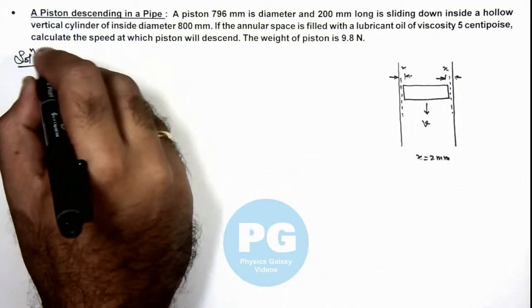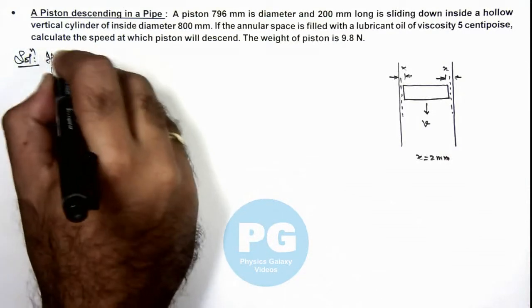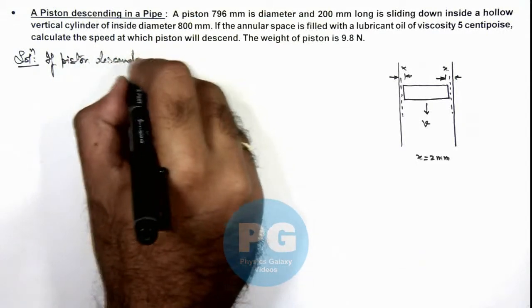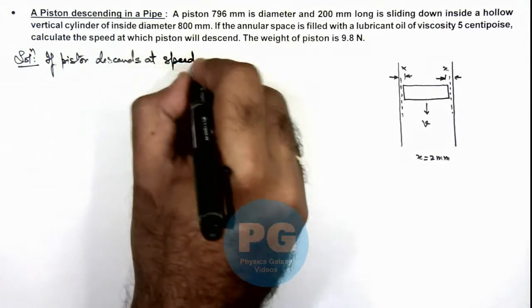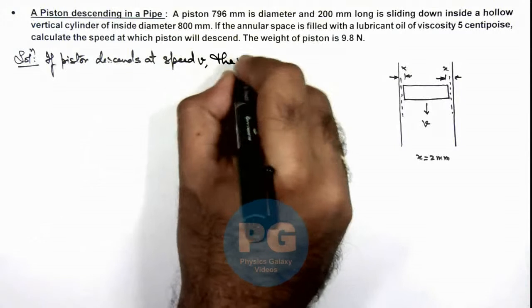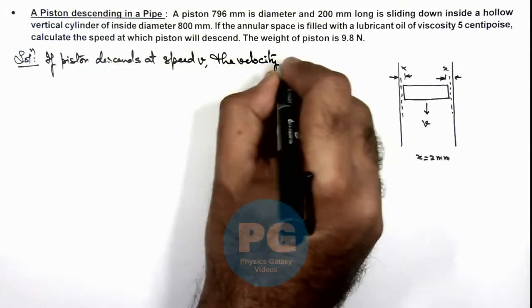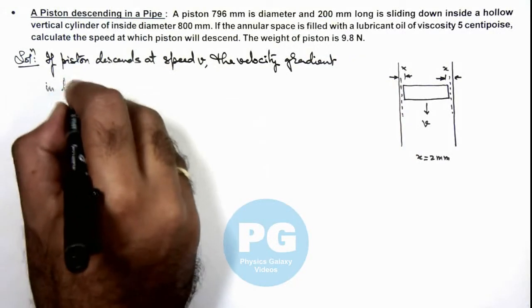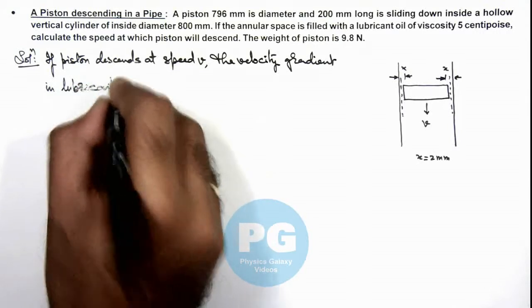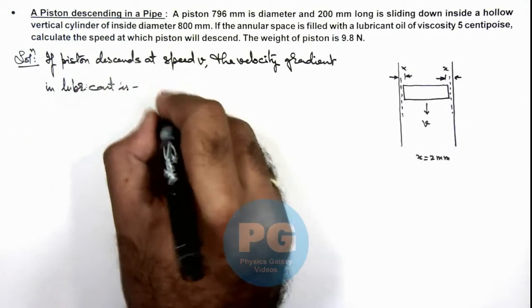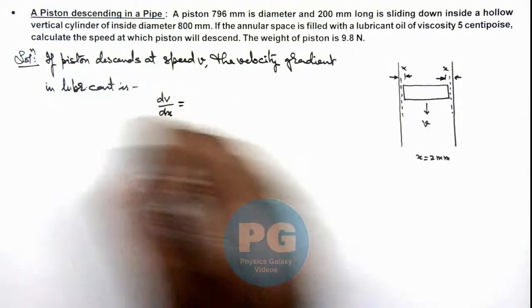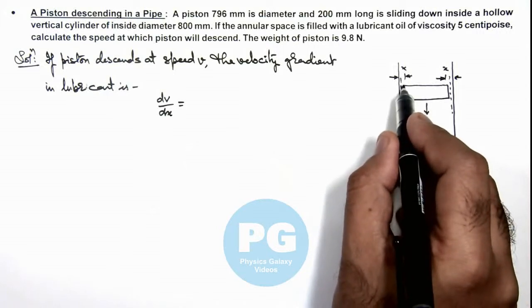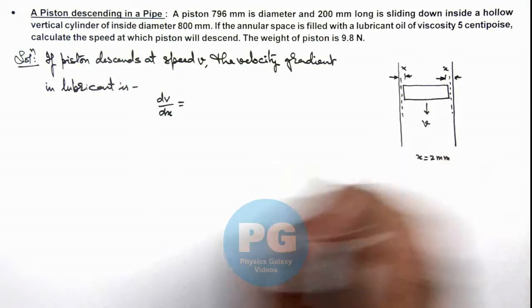So in this situation here we can write if piston descends at speed v, the velocity gradient in lubricant is, here we can calculate the velocity gradient dv/dx as, here the lubricant layer which is attached to pipe will be at rest and the lubricant layer which is in contact with piston will be moving down at velocity v.